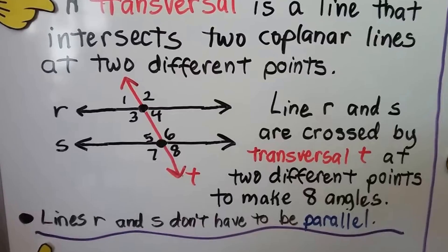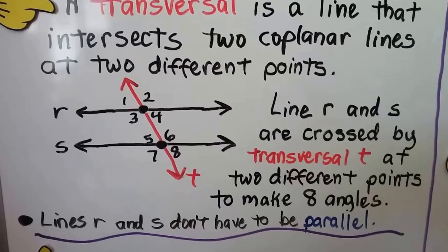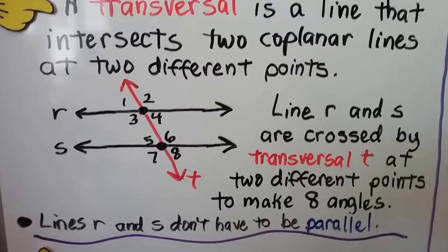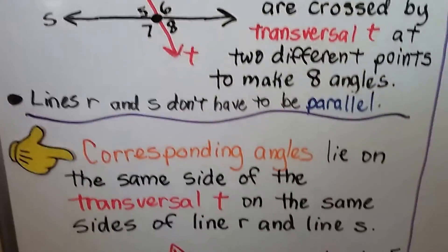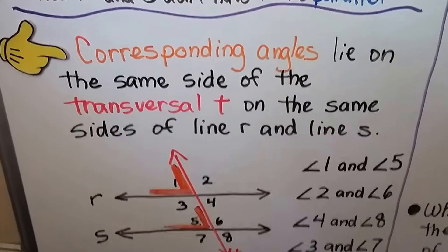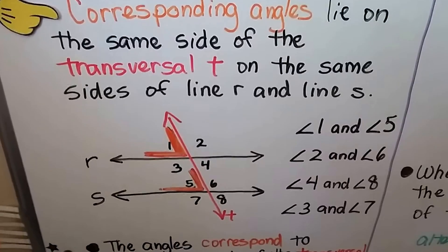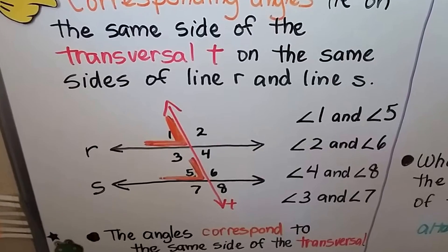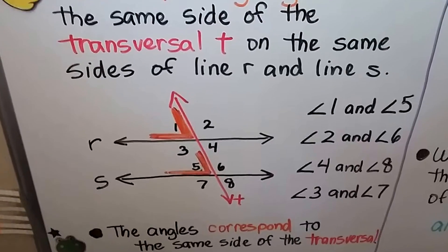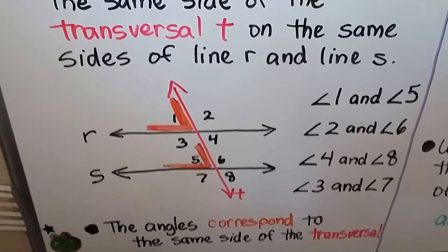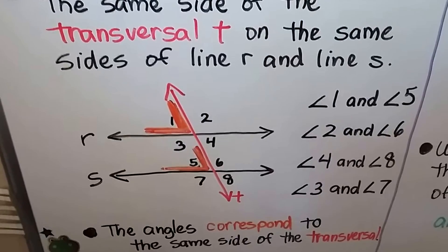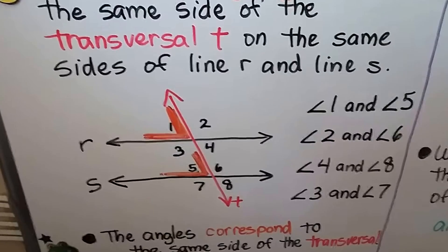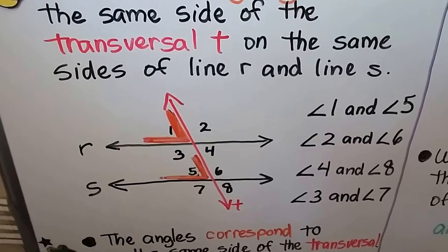Lines R and S are crossed by transversal T at two different points to make eight angles — you can see angles one through eight. Lines like R and S don't have to be parallel. Corresponding angles lie on the same side of the transversal T and on the same sides of lines R and S. Both angle one and angle five are on the same left side of the transversal, with angle one on top of line R and angle five on top of line S.